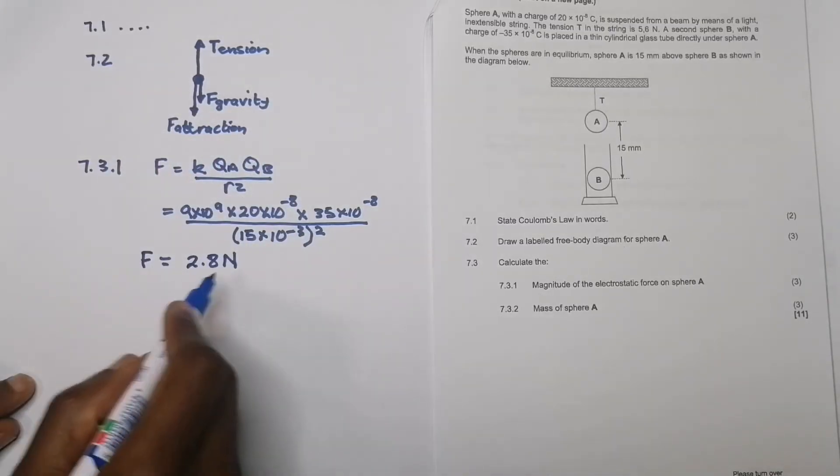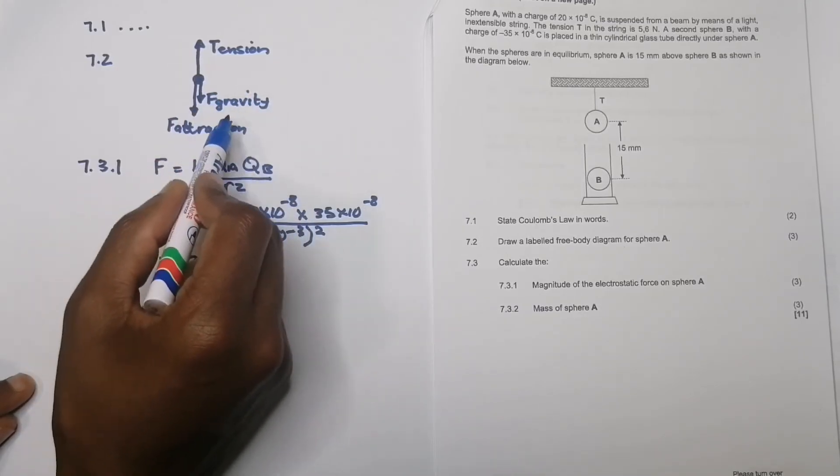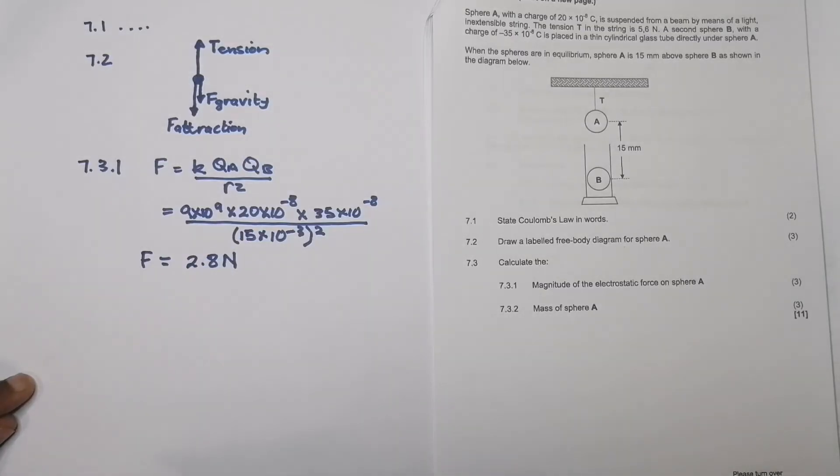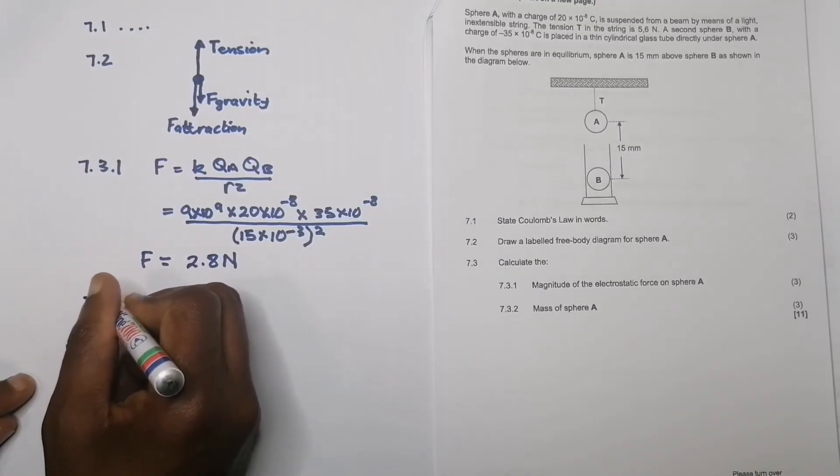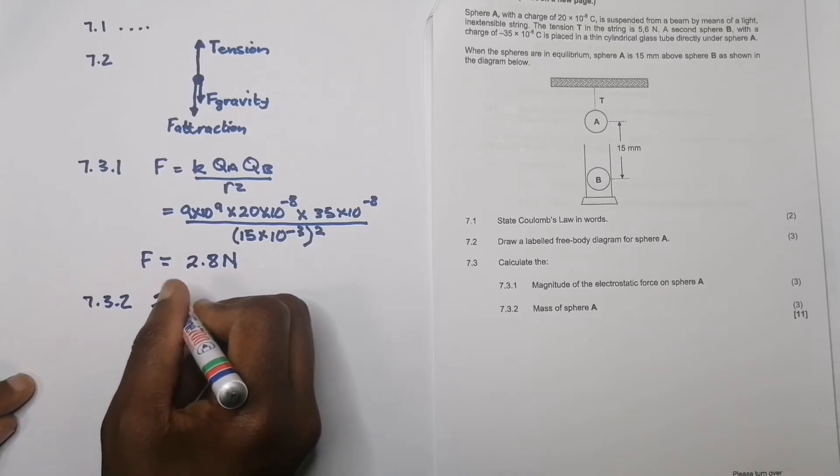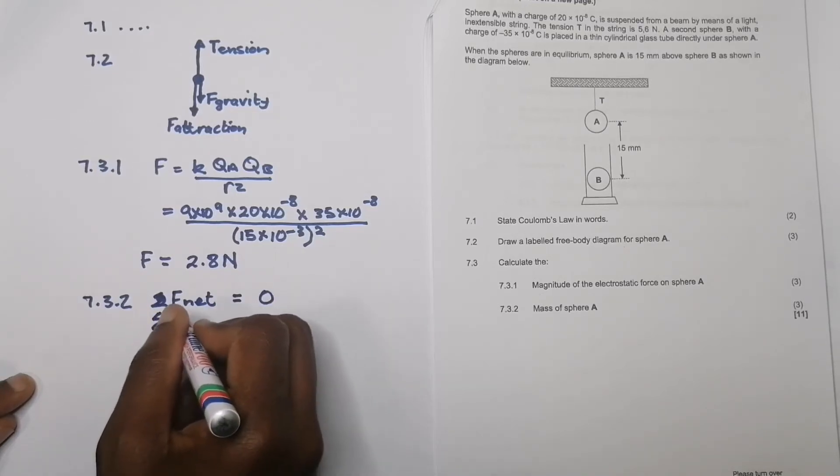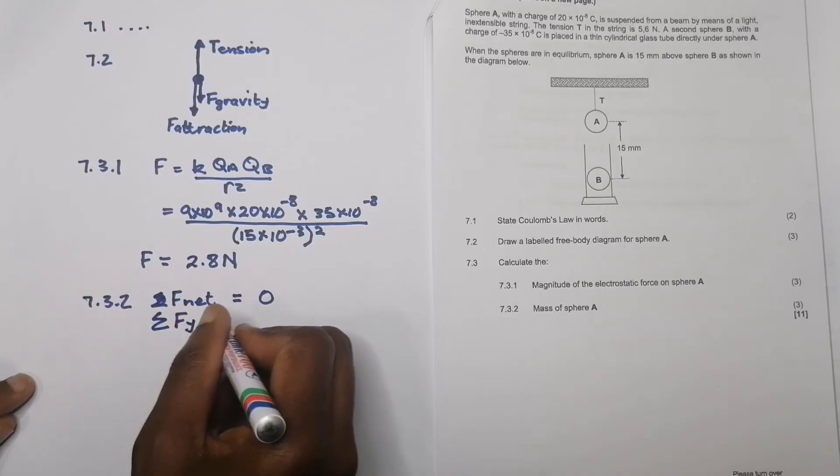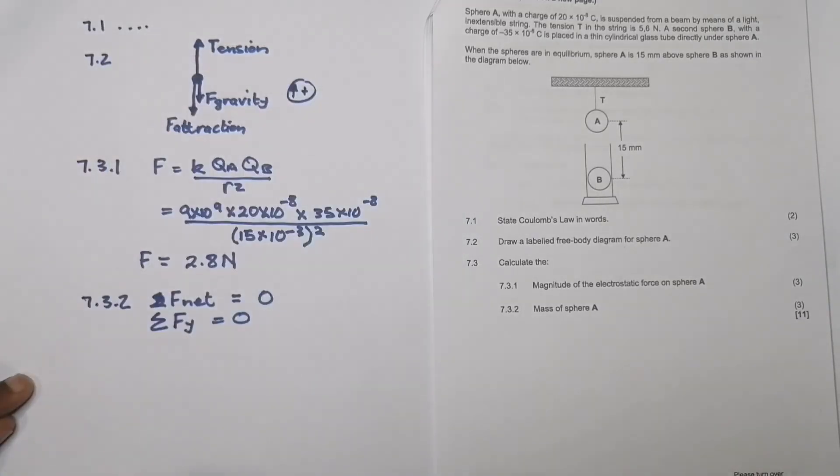Lastly, they say calculate the mass of sphere A. How are we going to get that mass? If we can find out what the gravitational force is, we know that gravitational force is mass times gravitational acceleration. So let's find out that gravitational force first. The sum of our vertical forces, F_net, is equal to zero.